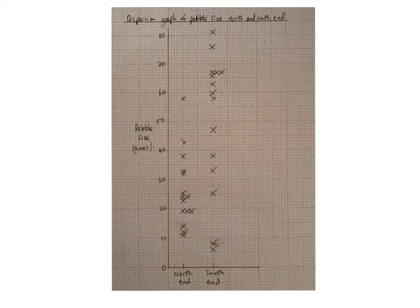You would then proceed to plot the south end of the beach data above the x-axis here. And again, where you have three pieces of data the same, you plot them horizontally, in this case 67.